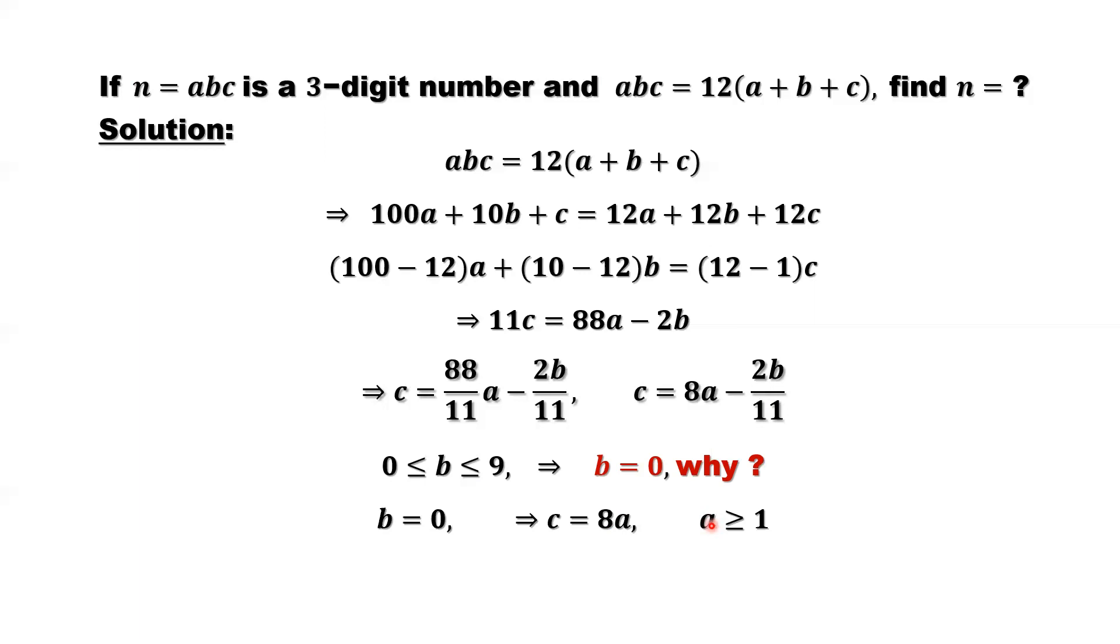A cannot be 0 because a is a leading digit. It has to be bigger than or equal to 1. Otherwise, it's a two-digit number. So here it's a three-digit number, so a must be equal to or greater than 1.